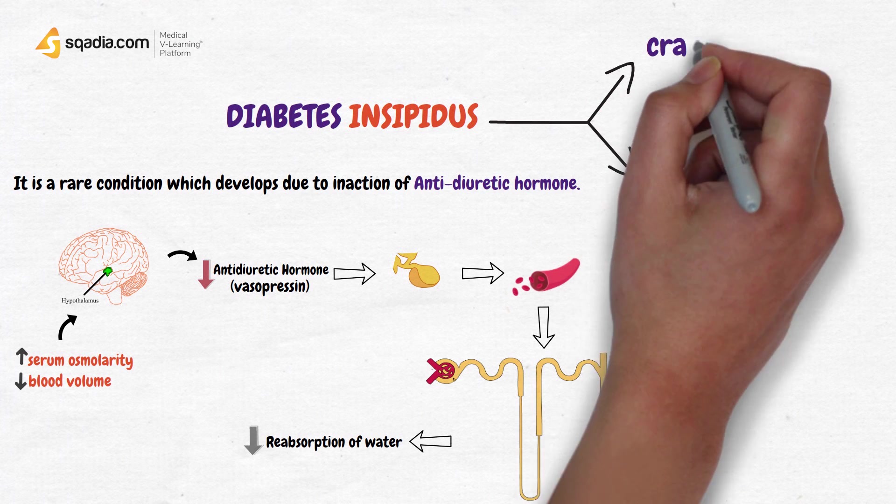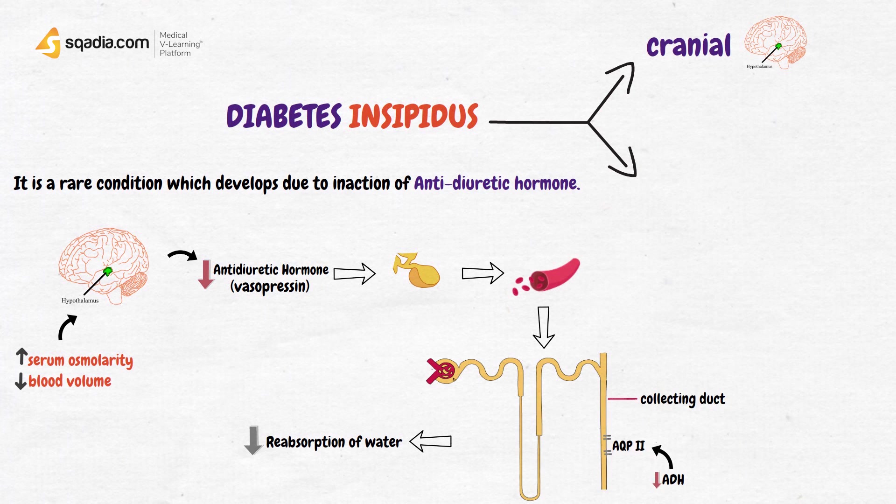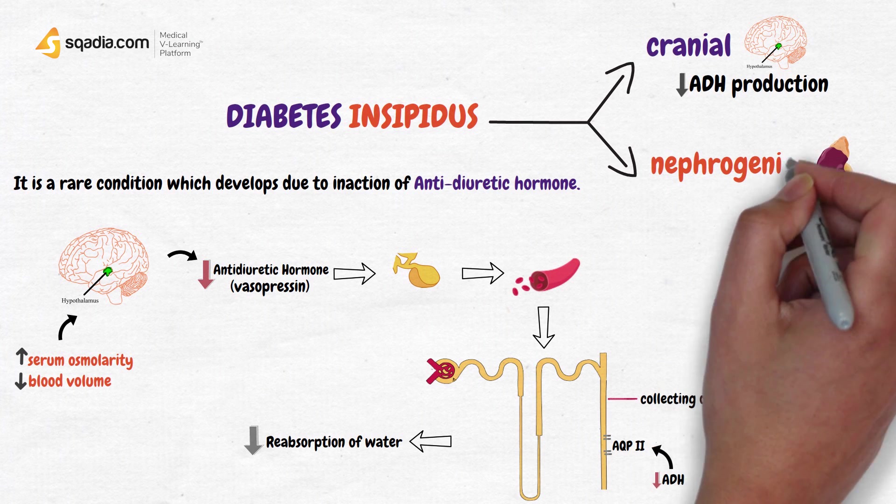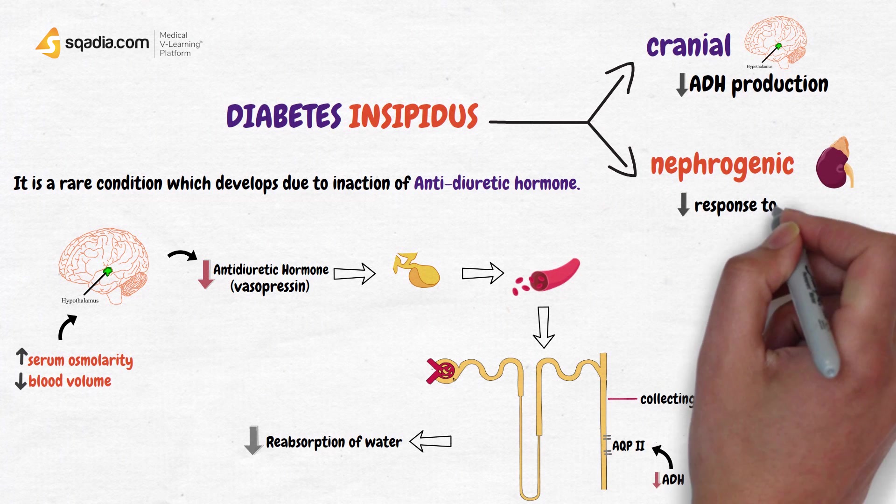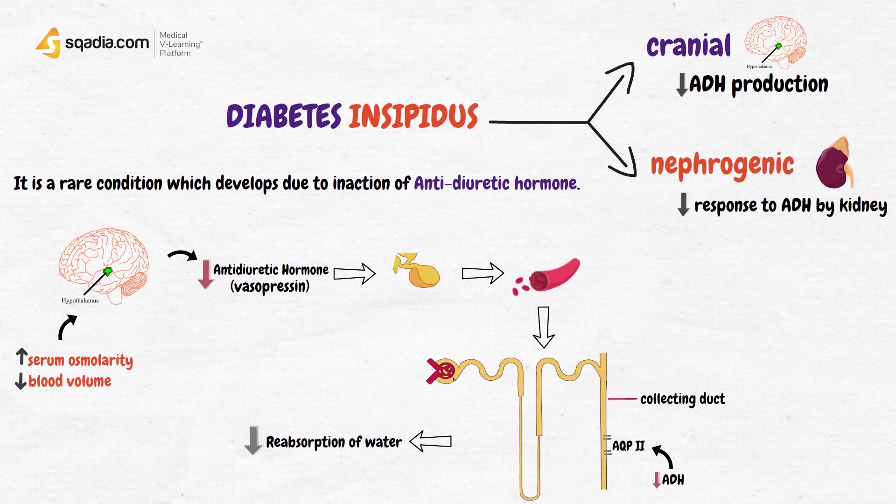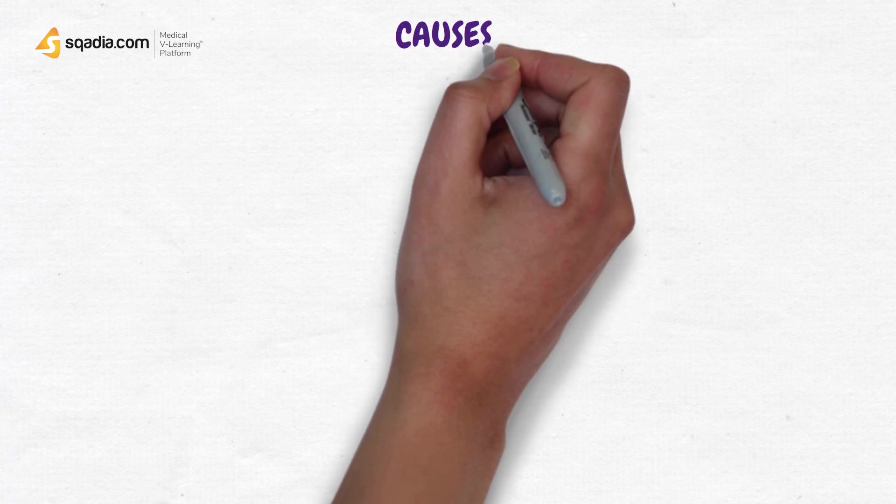Diabetes insipidus can either be cranial, in which there is decreased ADH production from the hypothalamus, or nephrogenic, in which there is decreased response to the ADH by kidneys. Let's look at the causes of each of these.